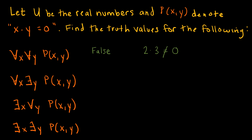What about the next one: for all x's, there exists some y such that x times y equals 0? For any x I choose — 3, 7, 4, 29, negative 32, 1/2, any real number — is there just one y I could multiply by anything I plug in for x and end up with 0? Yes, there is: y equals 0. So if y equals 0, there does in fact exist a y value which makes x times y equal 0 for any x. This is true.